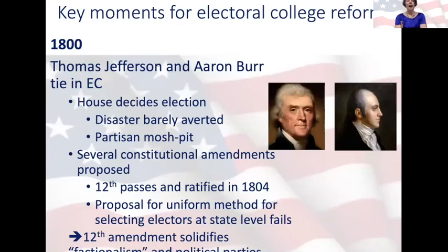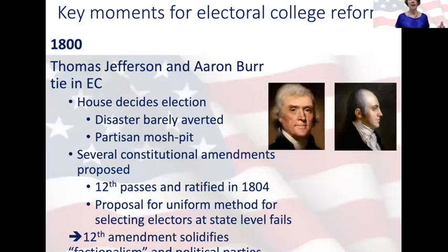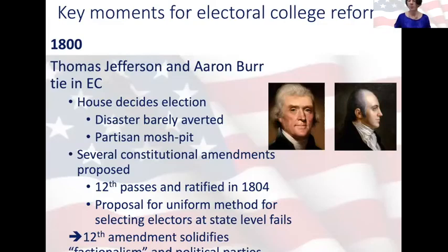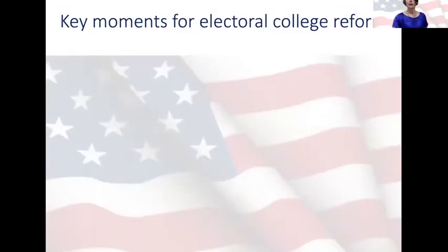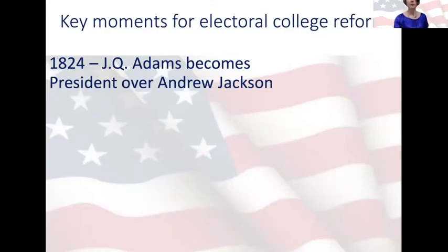However, that reform effort ended up failing. The best nonpartisan approach was to promote greater democracy at the state level by having each state select electors by districts, much as we now select members of the House of Representatives — but that failed in part because the Electoral College had become so politicized. Then another disaster struck only 24 years after the 1800 mosh pit. In 1824, John Quincy Adams became president over Andrew Jackson, even though he came in second in the Electoral College — 84 electors to Jackson's 99 — and got shellacked in the popular vote: Jackson received 41% to Adams' measly 31%.